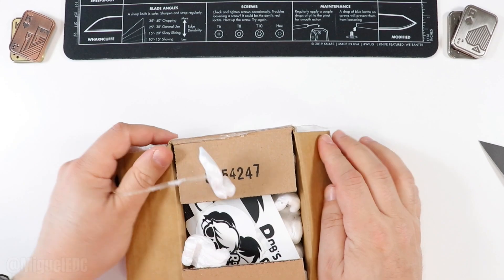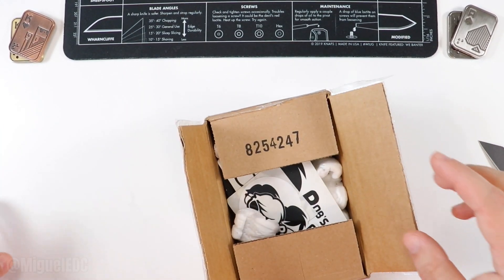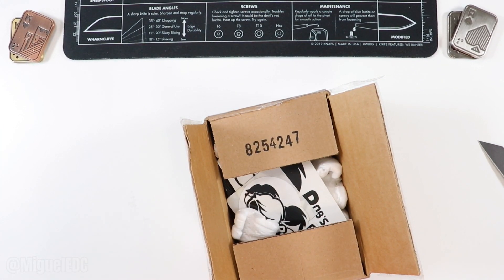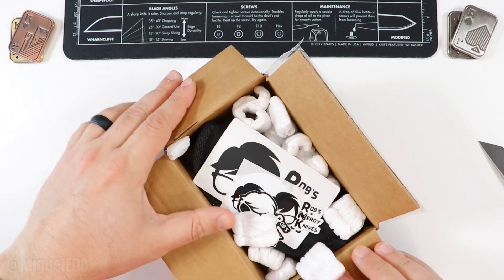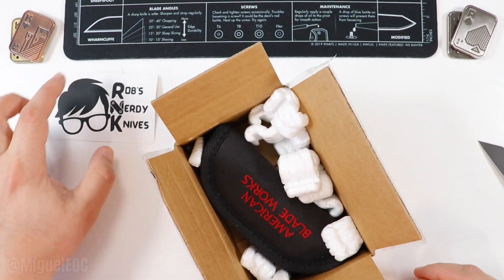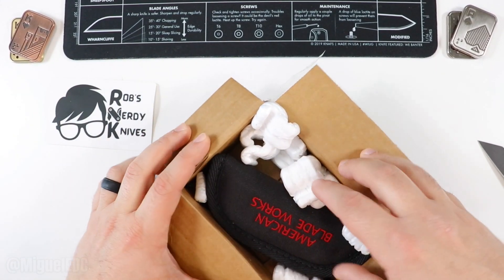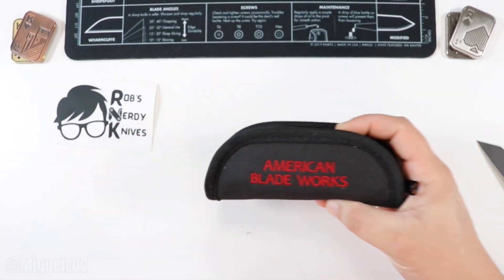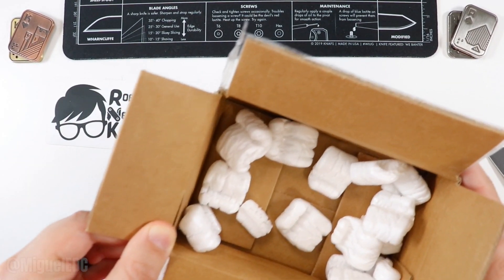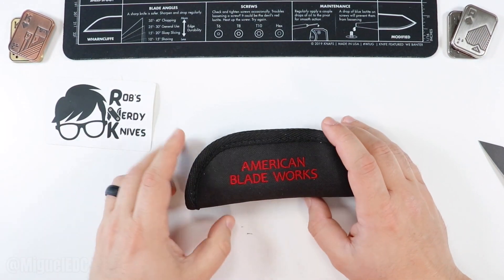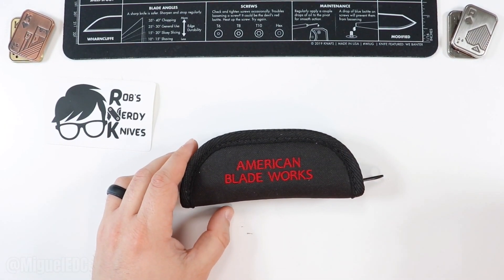That being said, I'm going to go ahead and start by making a cut somewhere. There we go. We're opening it upside down, and here we are, just like I predicted. We have a knife here from Rob's Nerdy Knives. Give him a sub. He also makes awesome, great EDC content. We have an American Blade Works knife that we're going to be checking out here.